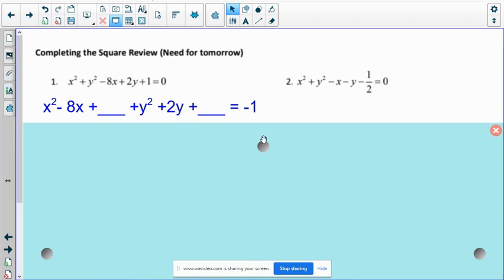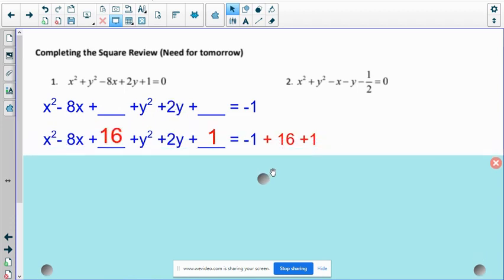So that's what I'm going to put in this space. And I would do the same thing for y. 2 divided by 2 is 1. 1 squared is 1. So I'm going to put a 16 in this spot and a 1 in this spot. But I can't just put them there. I also have to add them to the other side. So you'll see I added a 16 and 1 to the same side.